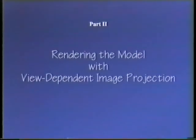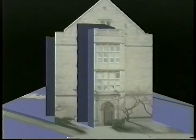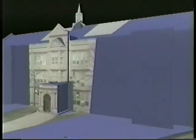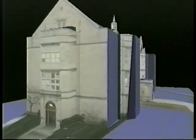Once the model and the original camera positions are recovered, the photographs can be re-projected onto the model. Here we see four of the original images projected onto the high school model using a shadow buffer algorithm to correctly predict the model's self-occlusion.